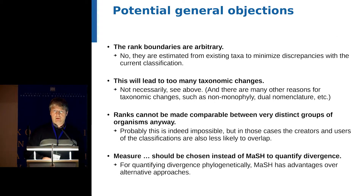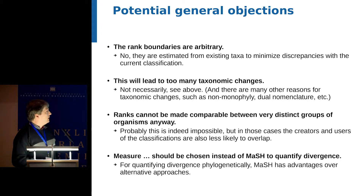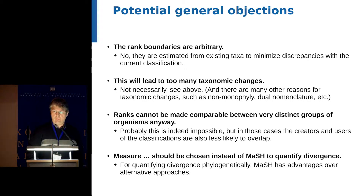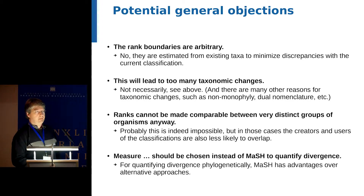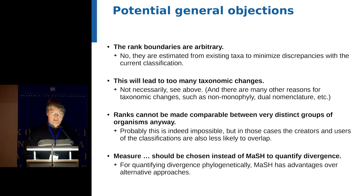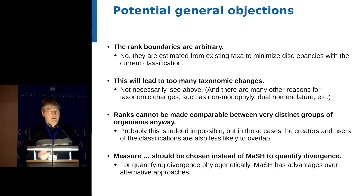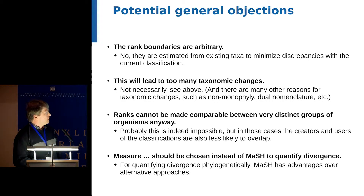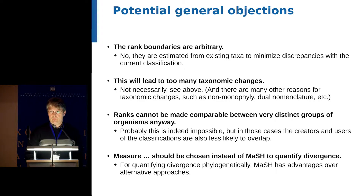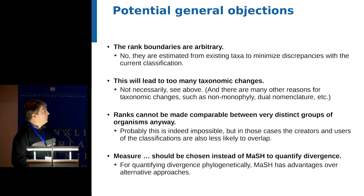Having shown this example, I want to discuss potential general objections. The first is that rank boundaries are arbitrary. To some degree, clearly they are, but they have been estimated from existing taxa and therefore already reflect existing biological taxonomic information. Another issue is that enforcing rank consistency might lead to many taxonomic changes, but using this way of estimating boundaries we can actually minimize the number of necessary taxonomic changes. And there are currently many other reasons for reclassifications anyway, such as non-monophyletic groups or dual nomenclature.